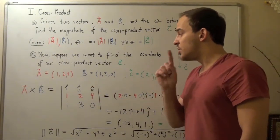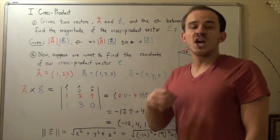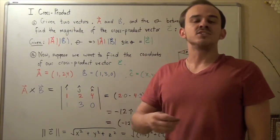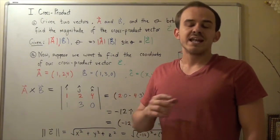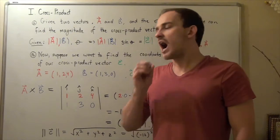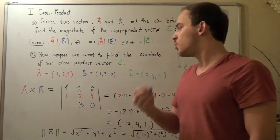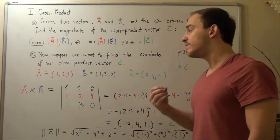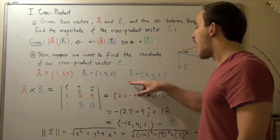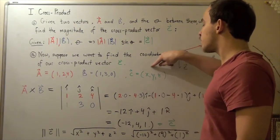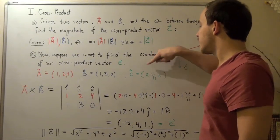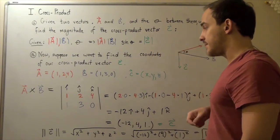Note that this systematic approach comes from mathematics — from linear algebra and taking the determinants of matrices. I'm not going to go into detail about how that's accomplished; I'm just going to give you the systematic approach. If you follow this, you will always be able to get the three coordinates of our three-dimensional vector: the x-coordinate, y-coordinate, and z-coordinate.